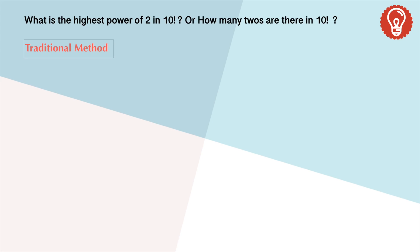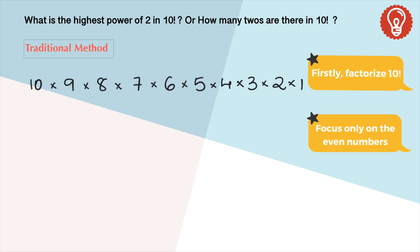To find the highest power of 2 in 10 factorial, let's first solve this question in the traditional method, for which we'll have to factorize 10 factorial. So that's 10 × 9 × 8 × 7 × 6 × 5 × 4 × 3 × 2 × 1. Now let's focus only on the even numbers because we need 2's.